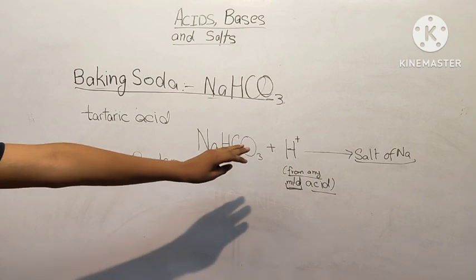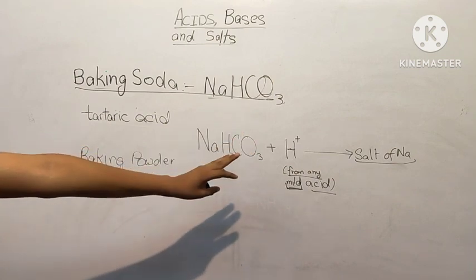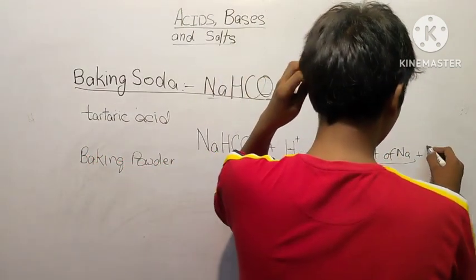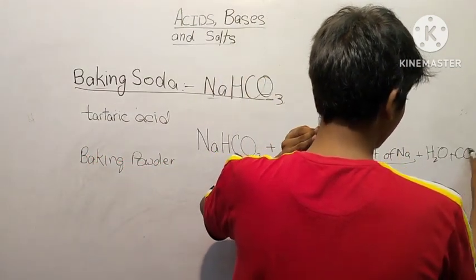NaHCO3, when you add hydrogen ion from the acid, produces H2O water and CO2 carbon dioxide.